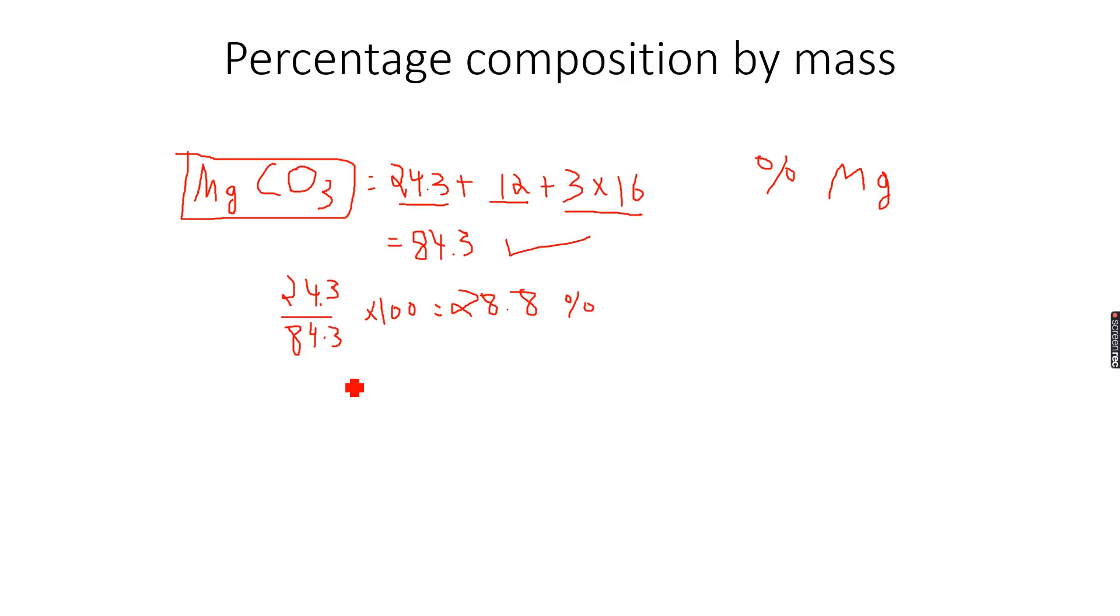When we are asked to calculate the percentage by mass of Mg, we divide the mass contributed by Mg, which is 24.3, by the total mass, which is 84.3, multiplied by 100 because it's a percentage. The answer we get is 28.8%, which means that the percentage composition by mass of Mg in one mole of MgCO3 is 28.8%.